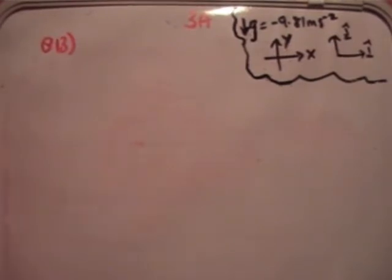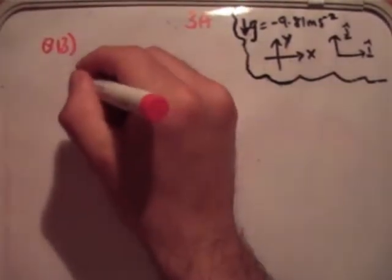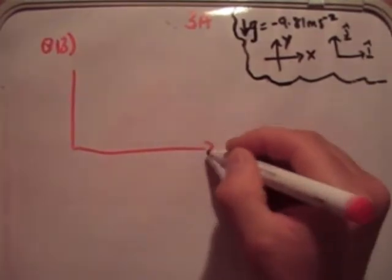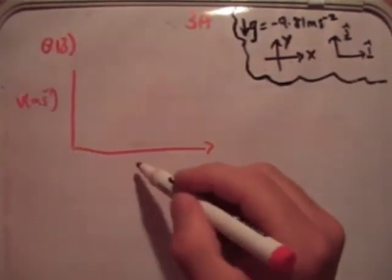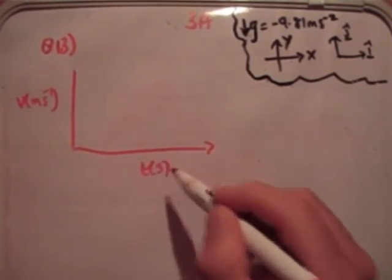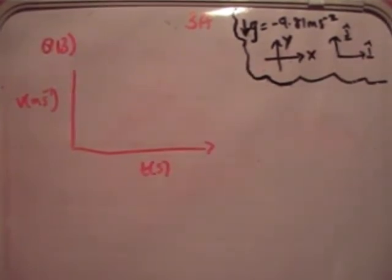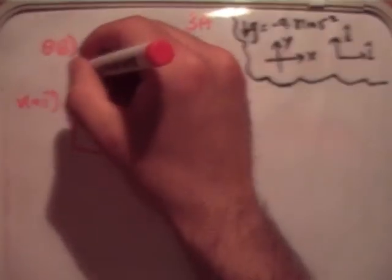So the first thing we need to do is to sketch what's going on. I'm going to draw a velocity time diagram. Velocity measured in meters per second and time measured in seconds.